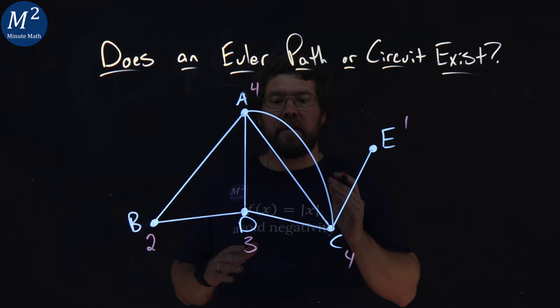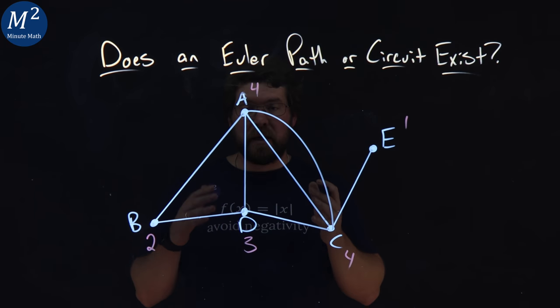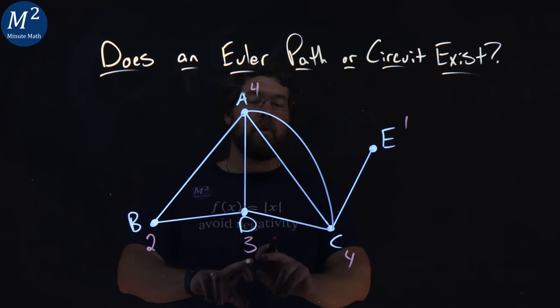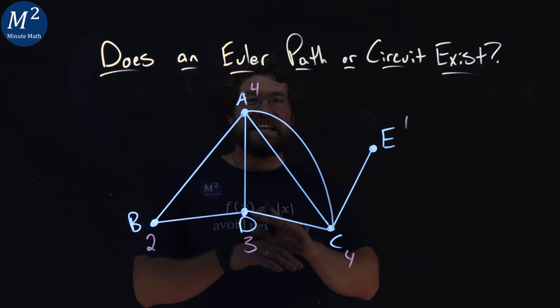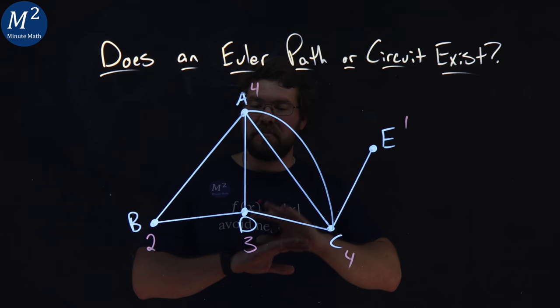An Euler circuit tells us that every single degree has to be even. We already have at least one odd degree. There's two here, and so an Euler circuit does not exist. Can't have an Euler circuit.